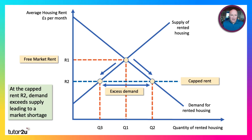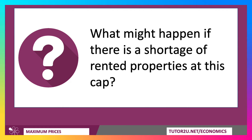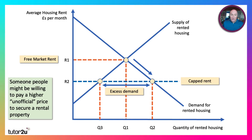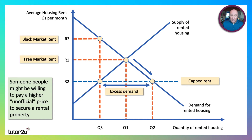This is the classic critique of rent controls — that they lead to excess demand in the market. So what might happen if there is a shortage of rented property at this cap? There is Q3 available for rent, but demand is Q2. Some people might be willing to pay a higher unofficial price above the official price cap to secure scarce rental property, so there could be a shadow market or black market rent of R3, because if you draw up to the demand curve, that's what some people would be willing to pay to secure a rental property.